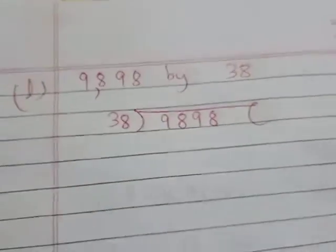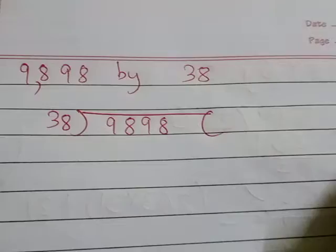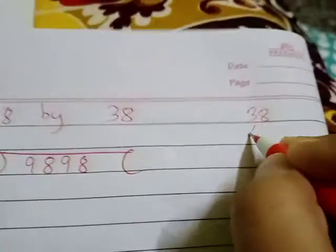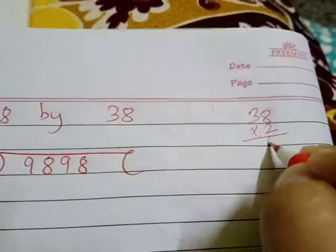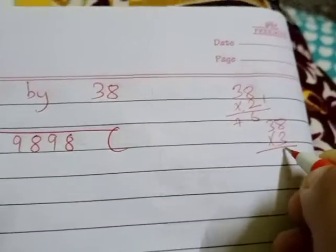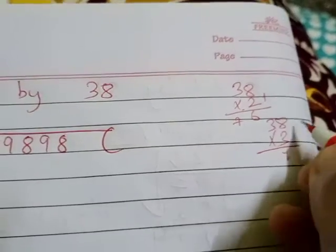We need to divide 9898 by 38. First, we check the table of 38 to find the number closest to 98. 38 into 2: 8s are 16, 2 3s are 6, so 76. 38 into 3: 8s are 24, plus carry...